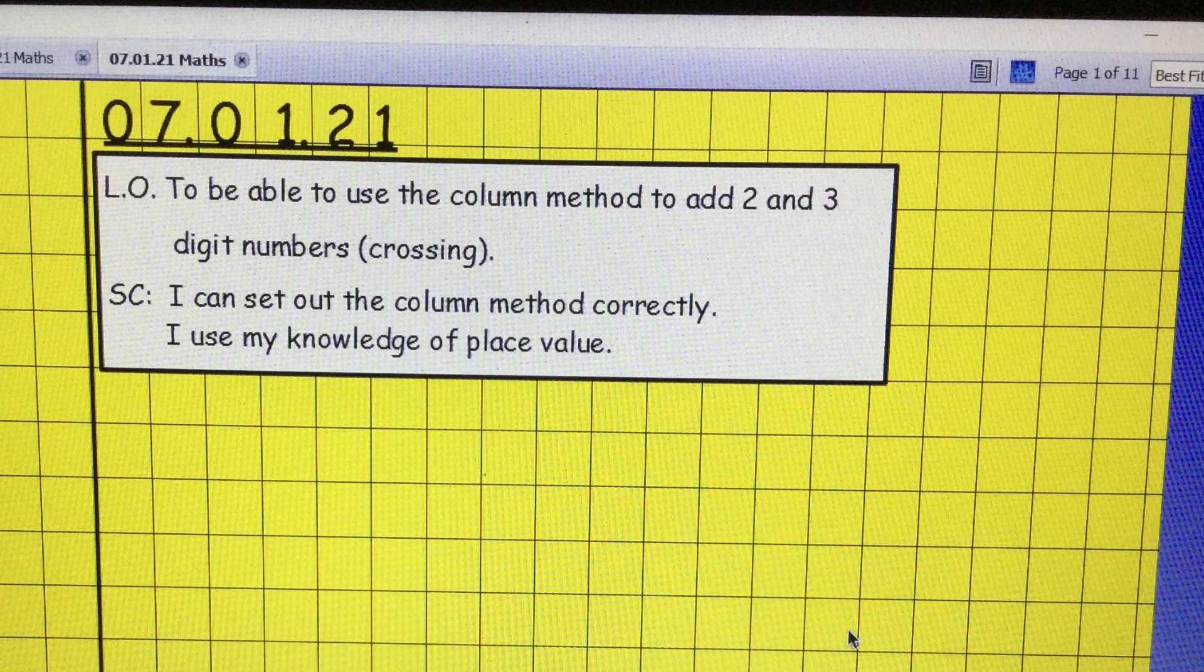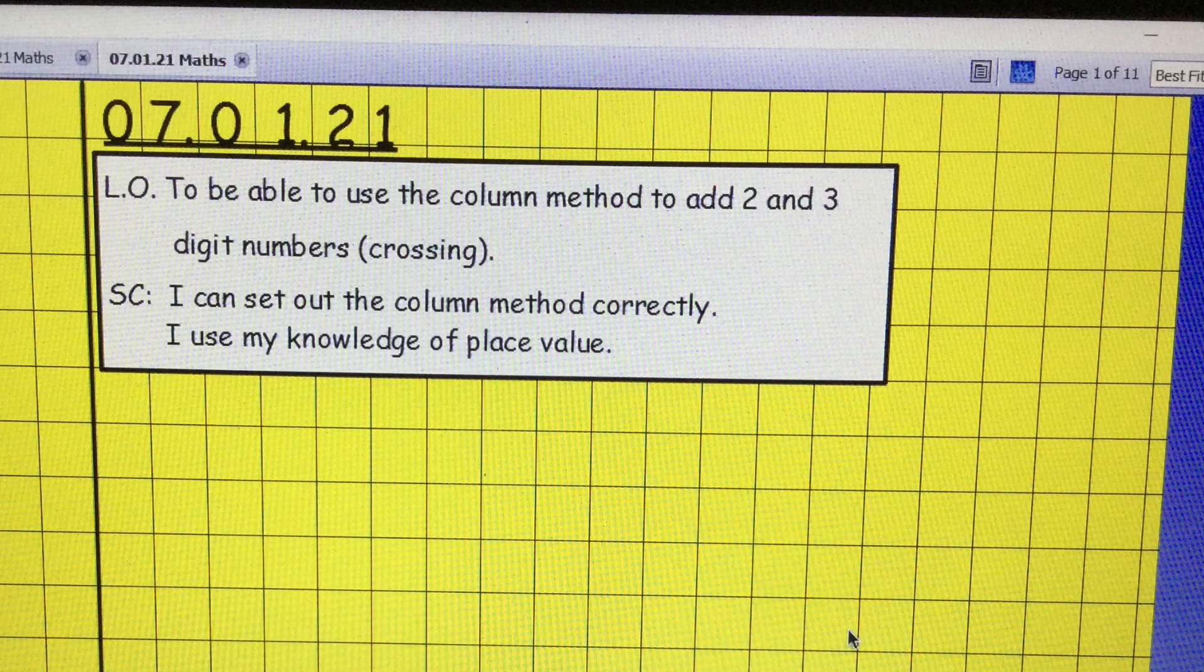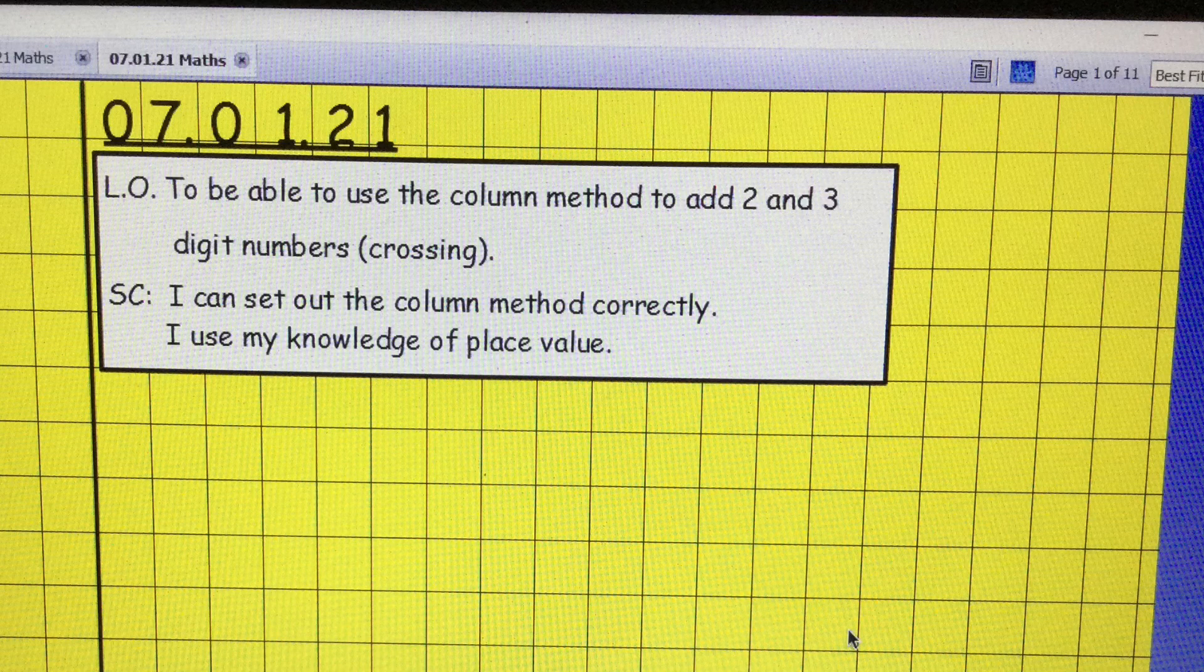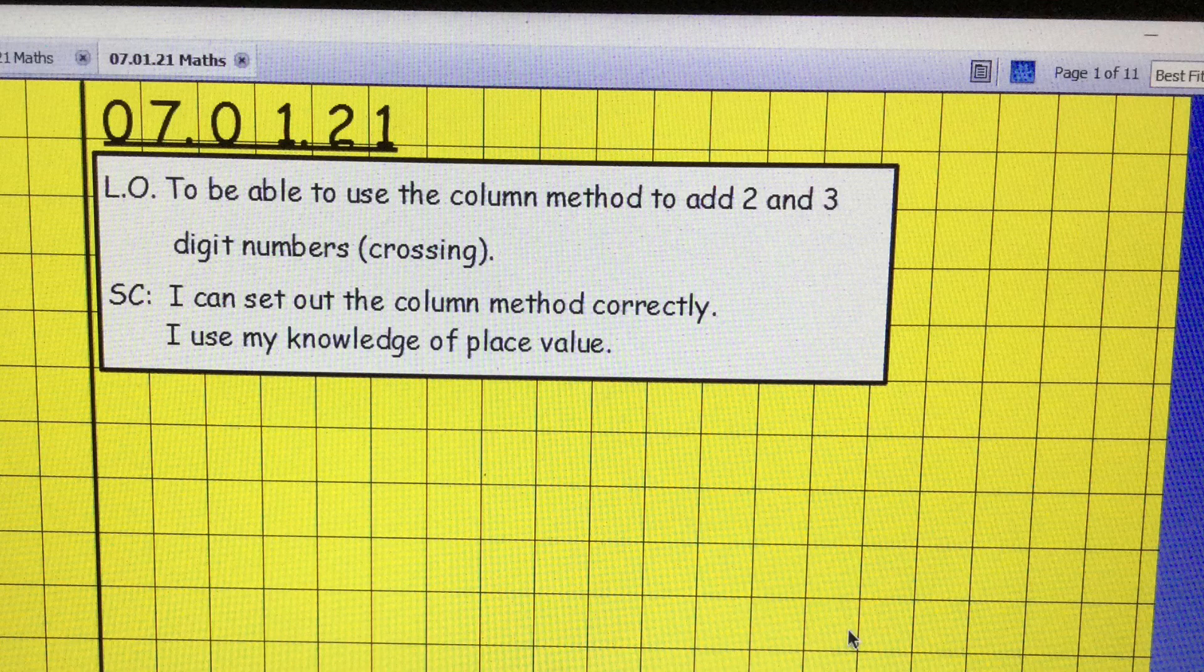Good morning everyone and welcome to Thursday's lesson. Our learning objective today is to be able to use the column method to add two and three digit numbers together whilst crossing. To be successful, we need to be able to set out the column method correctly and use our knowledge of place value.